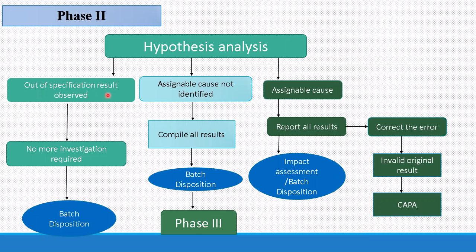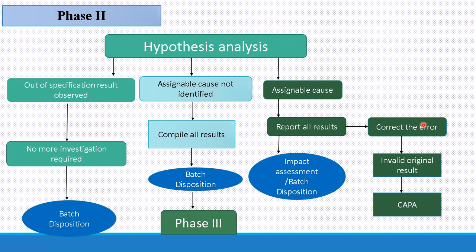If out-of-specification results are confirmed, no more investigation is required and batch disposition follows. If an assignable cause is not identified, compile all results and proceed to batch disposition and Phase 3. If an assignable cause is identified, report all results, perform impact assessment, and proceed to batch disposition. If a correctable error is observed, correct the error, invalidate the original result, and a CAPA should be taken. After correction of the error, re-analysis is required.